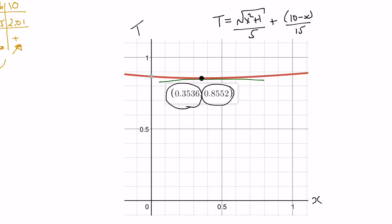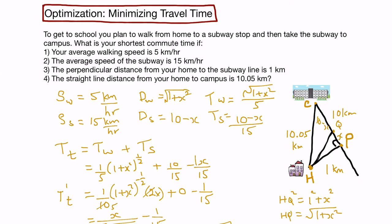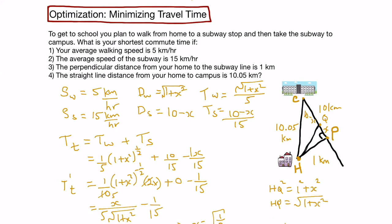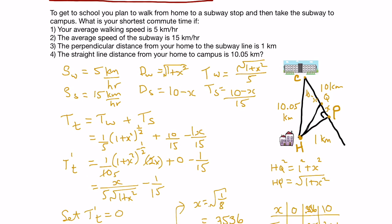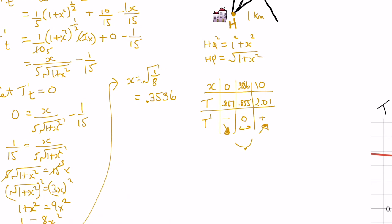Okay, I think we've got it. Let's go back and make sure we answered the questions. So, we're asked to find the shortest commute time given these constraints. Well, that shortest commute time is 0.855 hours. And that works out to be about 51 minutes and 18 seconds.